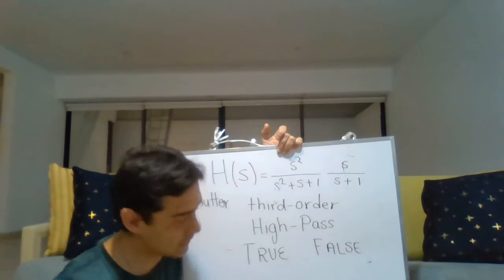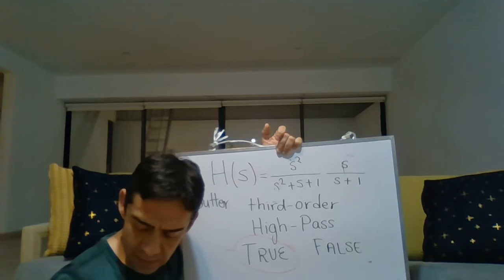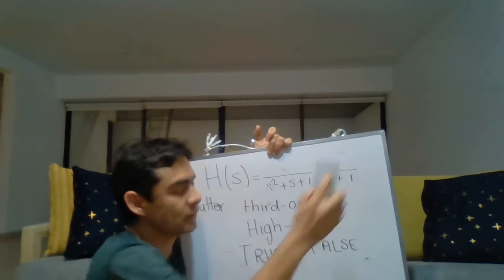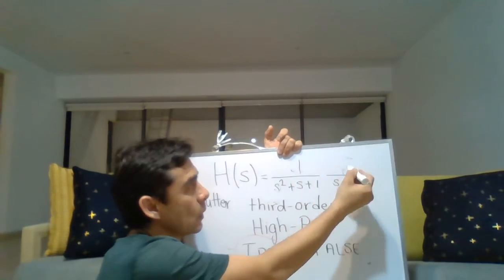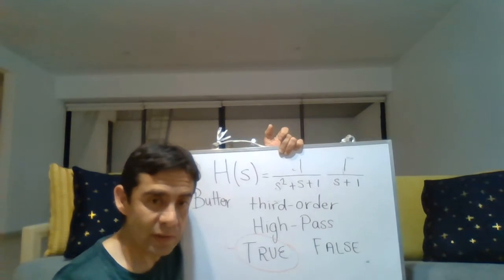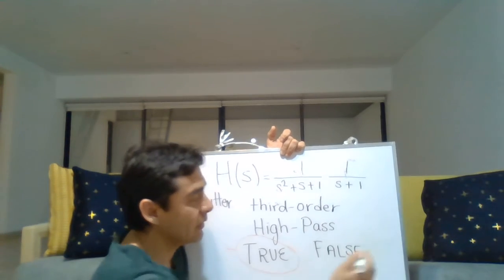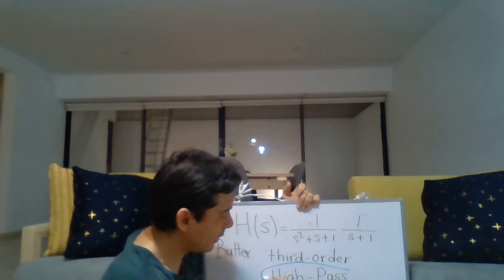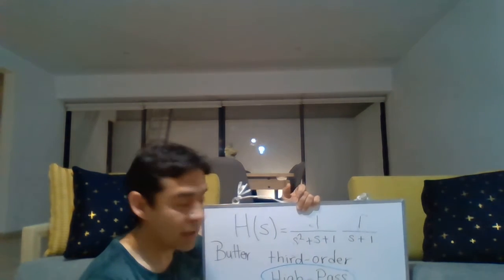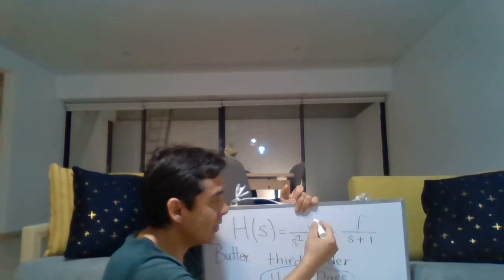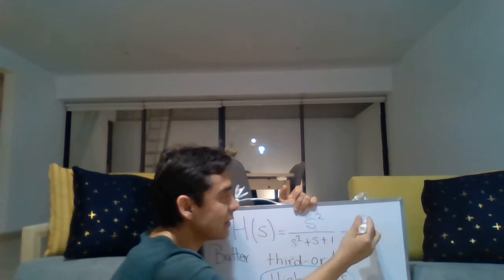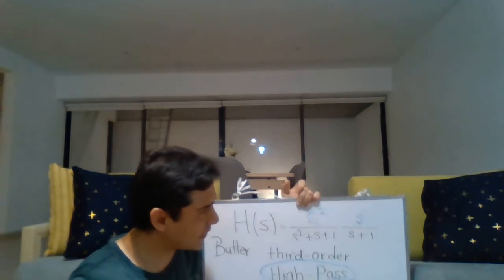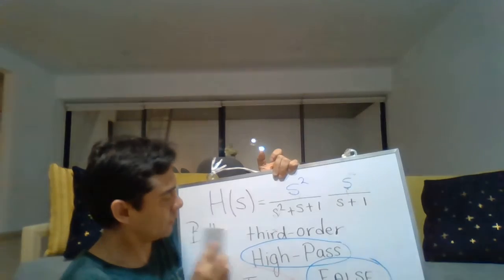The correct answer is true. But let's say instead of the initial expression you are given a different expression. In that case the statement is going to be false, and we know that because a high-pass filter has zeros at zero — so the numerator should be a polynomial in s.